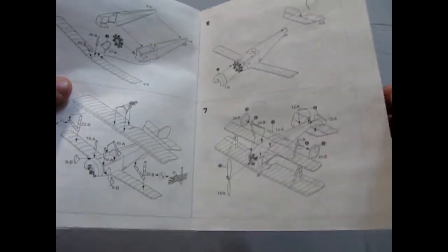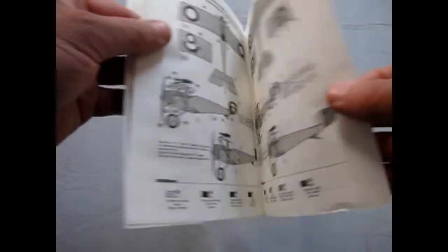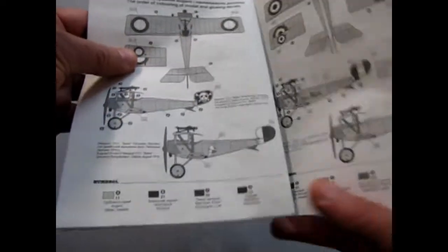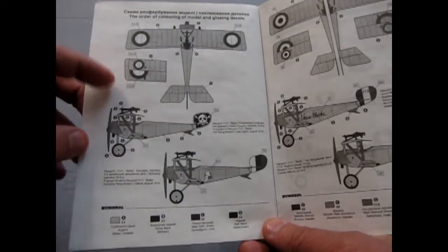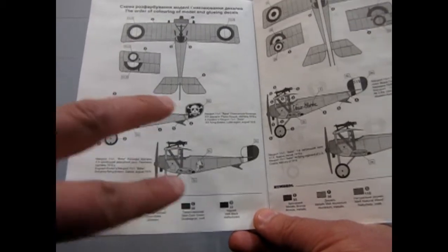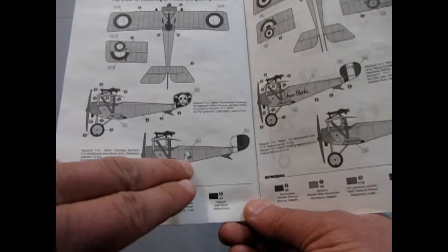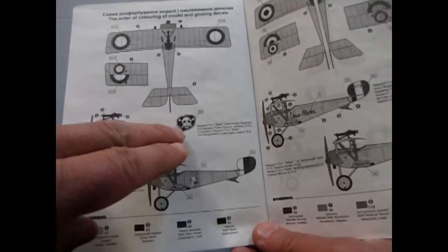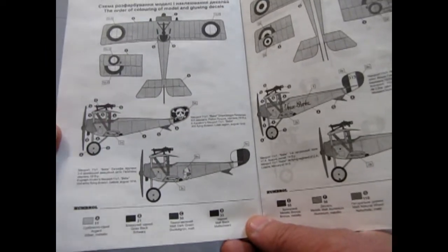So as you can see, there's quite a bit of detail into the instructions on this model. And here are the paint schemes and call-outs for the Russian Ace. There's actually two Russian Aces here. There's the one with the knight and the crown, and of course the skull and crossbones.